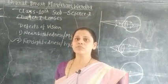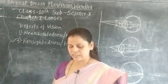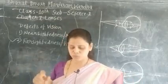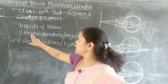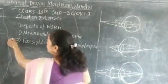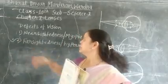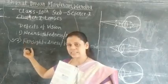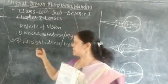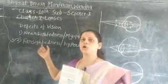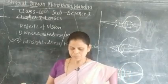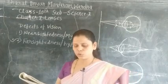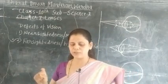The second defect of vision is farsightedness. In this defect the human eye can see distant objects clearly. In nearsightedness the human eye can see nearby objects clearly, but in farsightedness the human eye can see distant objects clearly. This means that the near point of the eye is no longer at 25 centimeters.